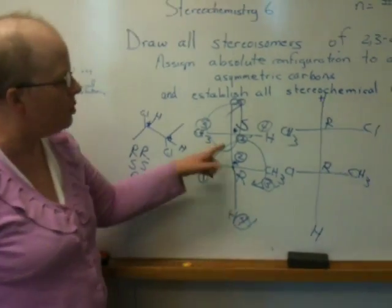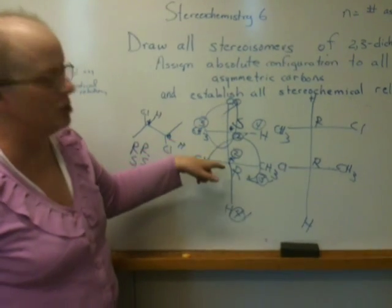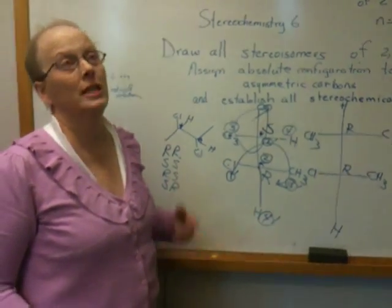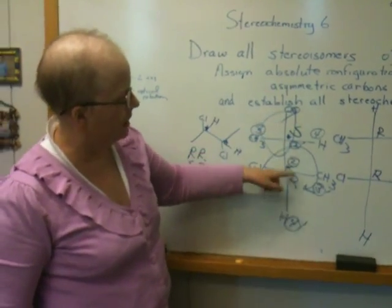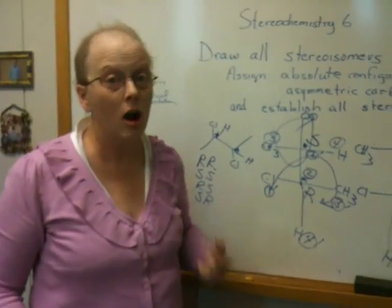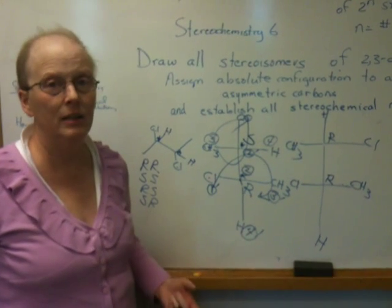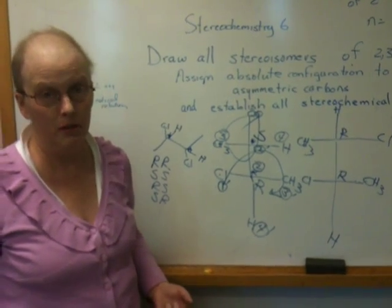What is the relationship? You can tell the relationship from the assignment. Because we've said that when SR looks in the mirror, it sees RS. Absolute configuration tells you about the three-dimensional nature of the center. So when SR is compared to RR, they are stereoisomers because they're not the same. But they are not enantiomers. What is their relationship? Their relationship is that they're diastereomers.